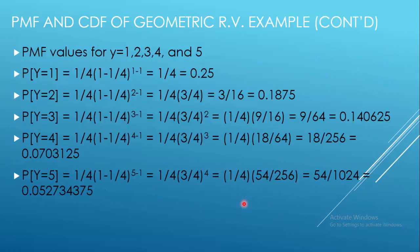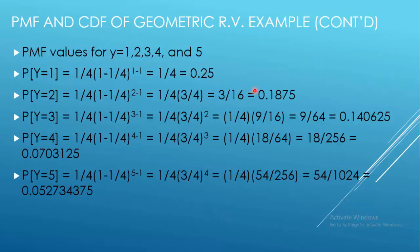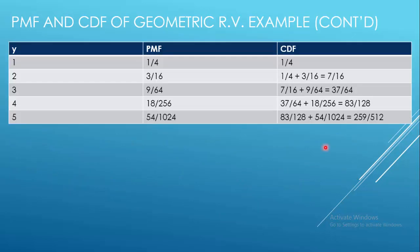We take PMF values for Y = 1, 2, 3, 4, 5 and plug them into the geometric PMF equation to get the results. To get the CDF we simply add them up cumulatively: 1/4 at Y=1; 3/16 plus 1/4 equals 7/16 at Y=2; 7/16 plus 9/64 equals 37/64 at Y=3, and so on.